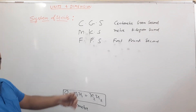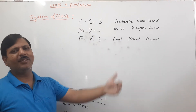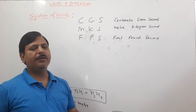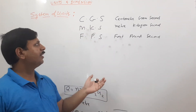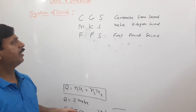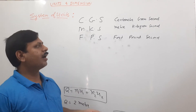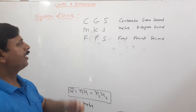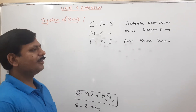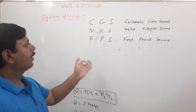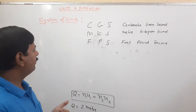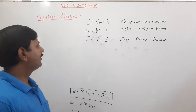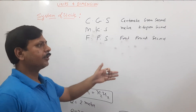In the CGS system, length is measured in centimeter, mass in gram, and time in second. In the MKS system, length is measured in meter, mass in kilogram, and time in second.